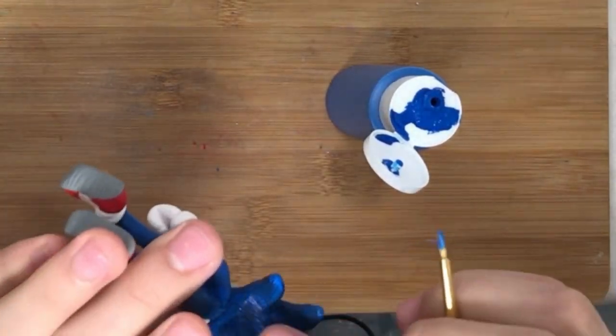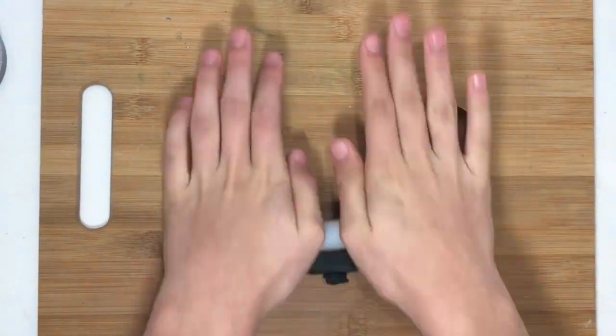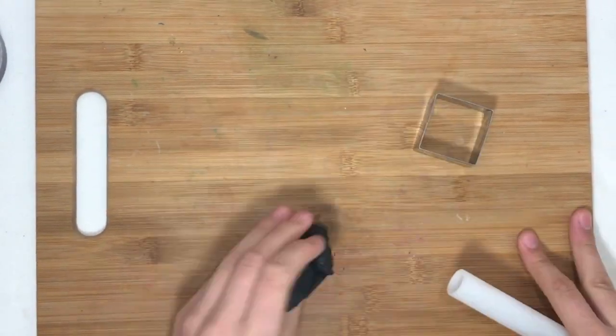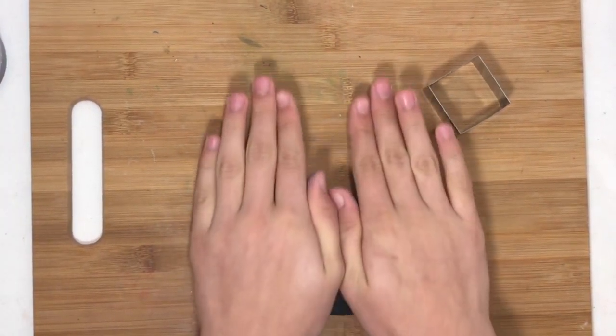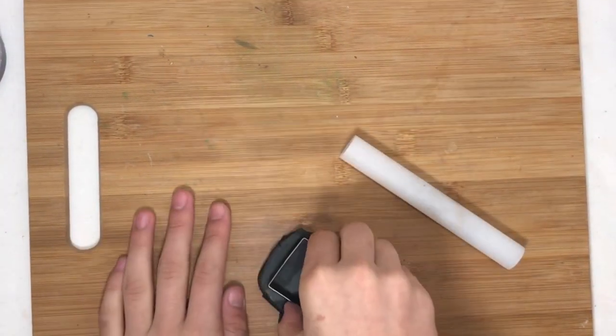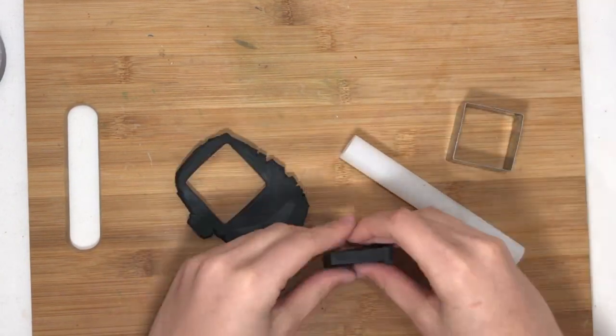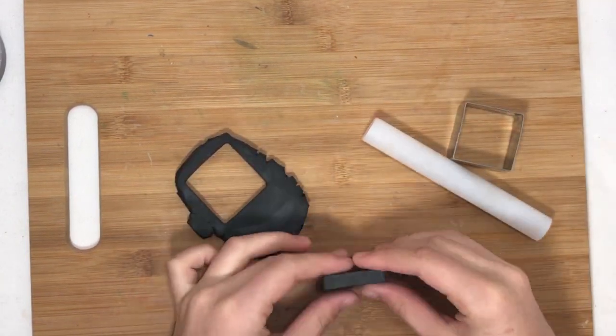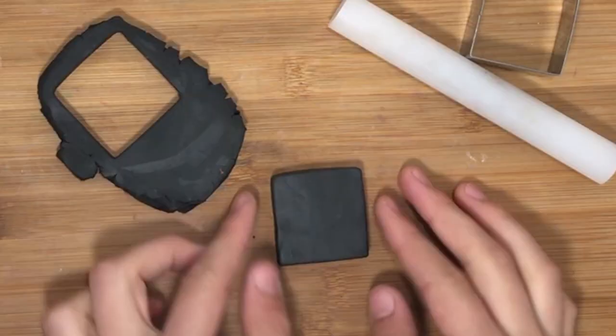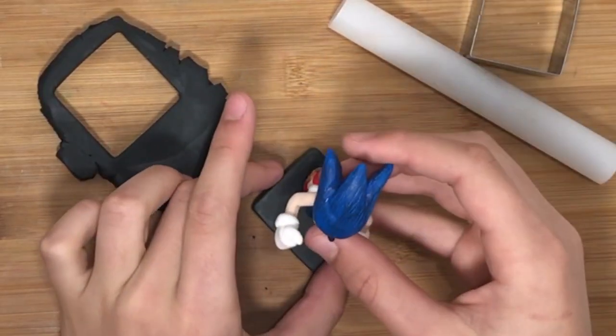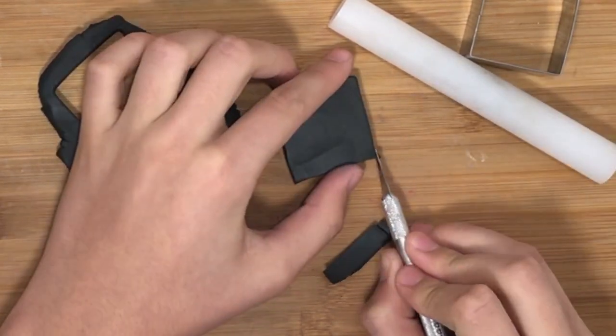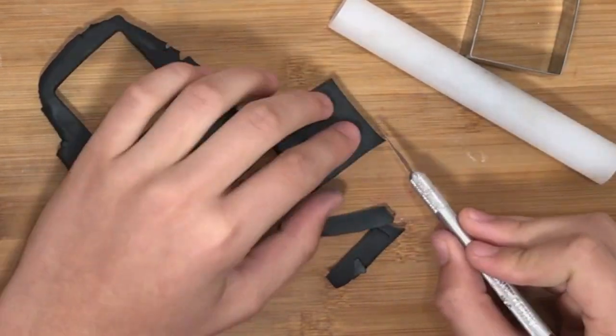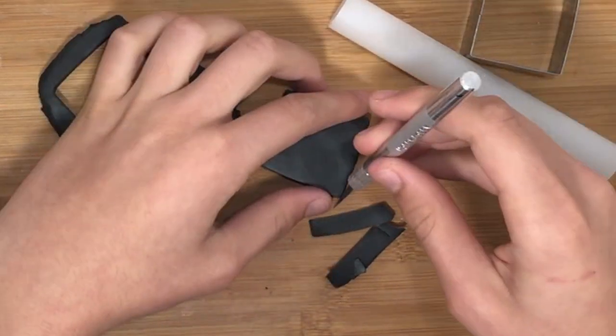Now we will work on the stand. I'm taking a piece of black clay and rolling it out. You want to make sure that it's all even. Cutting out a square, making sure that it's flat on all sides. Sizing it up, looks good. Trimming off just a little bit of the black because we'll be adding some other colors to the sides and I don't want it to be too thick.